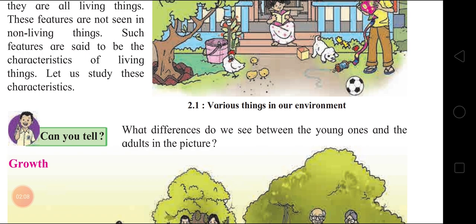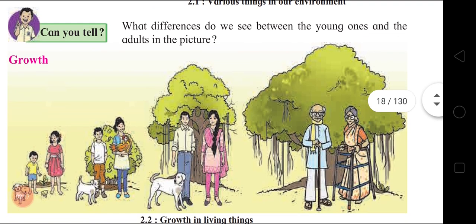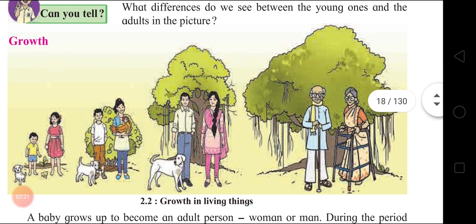If all these features are present, then only it is a living thing; otherwise it is a non-living thing. What differences do we see between the young ones and the adults? From left: small puppy, small boy, a girl, a small plant. Now slowly after some years they have grown up. The small puppy has become a dog, the boy has grown tall, the girl has also grown tall, and that small sapling has become bigger.